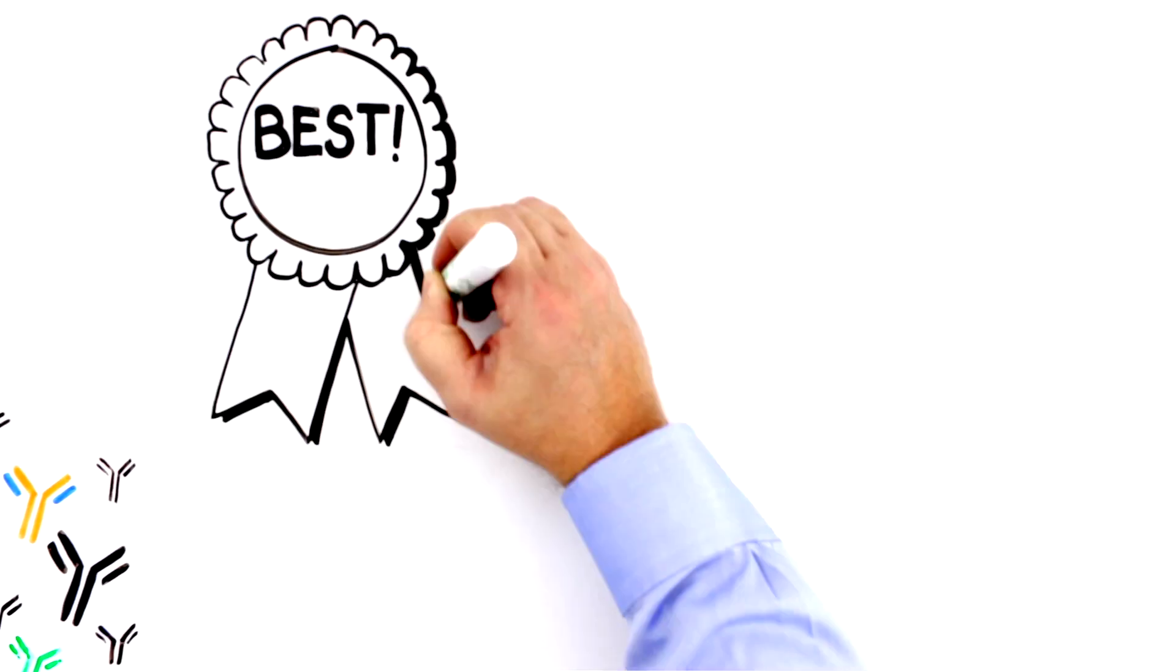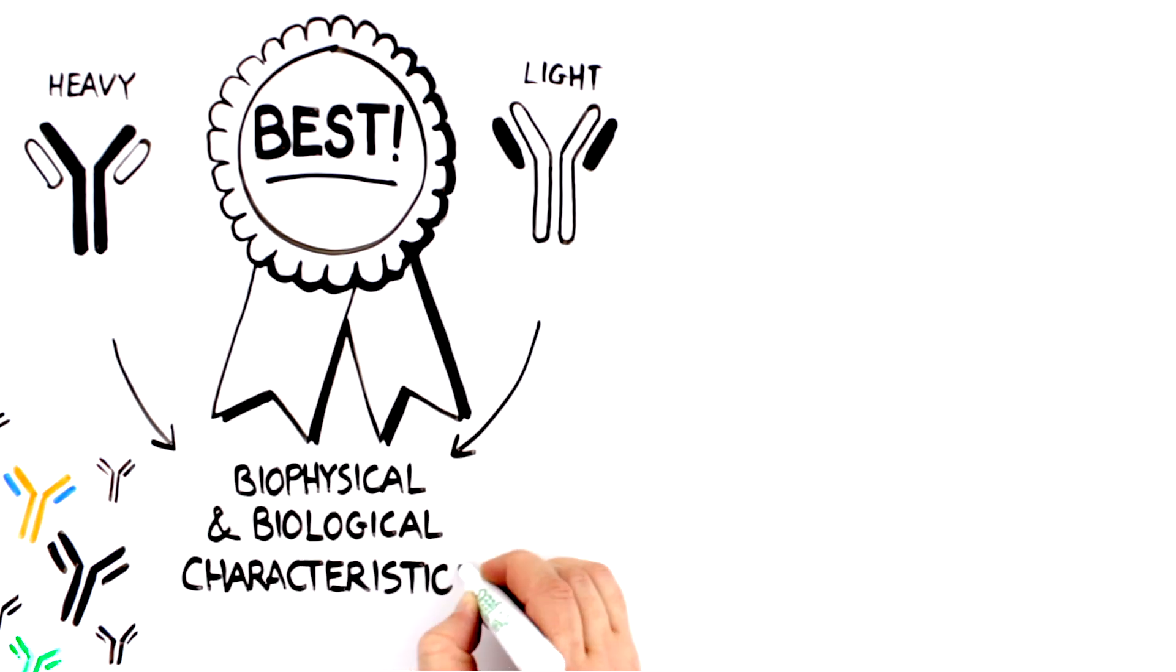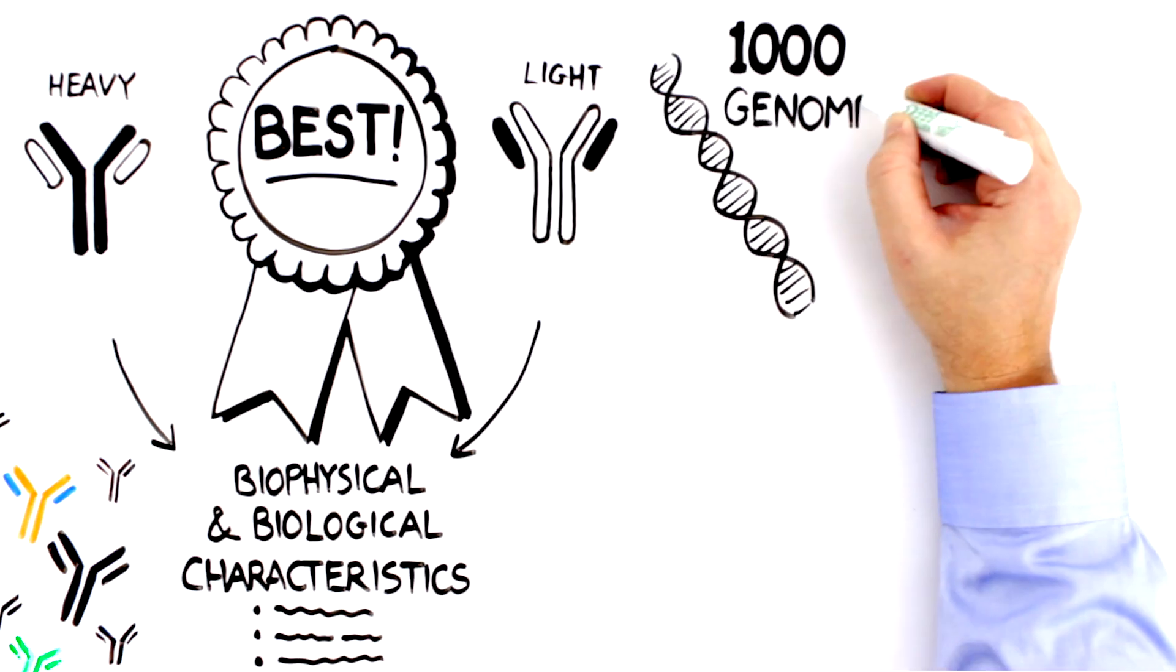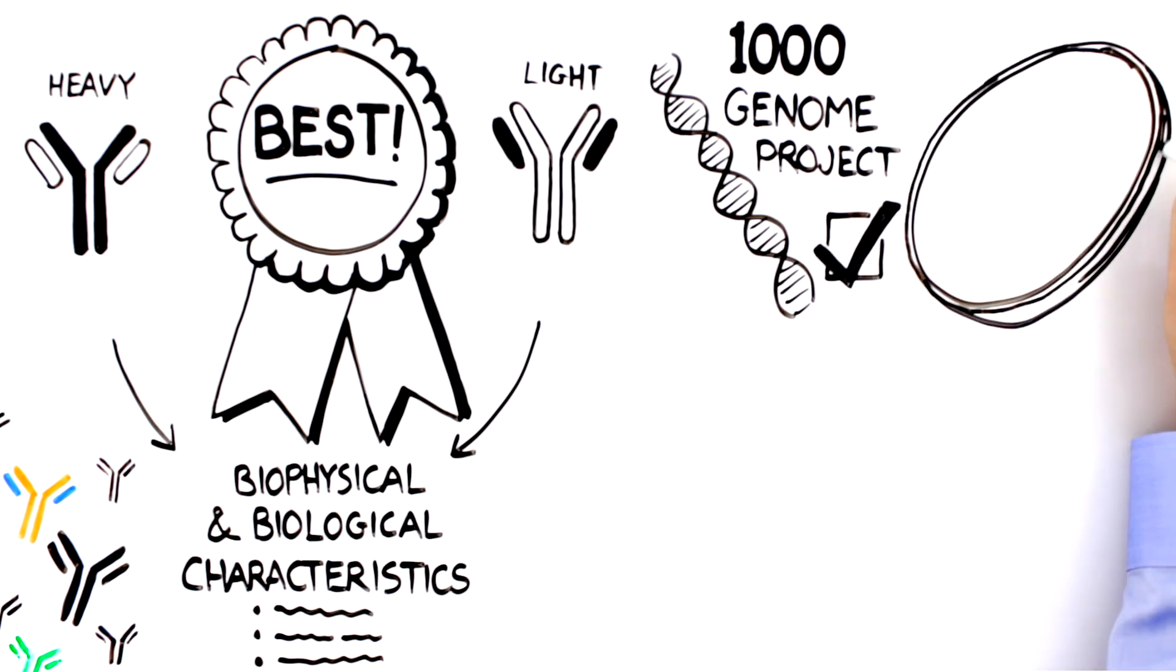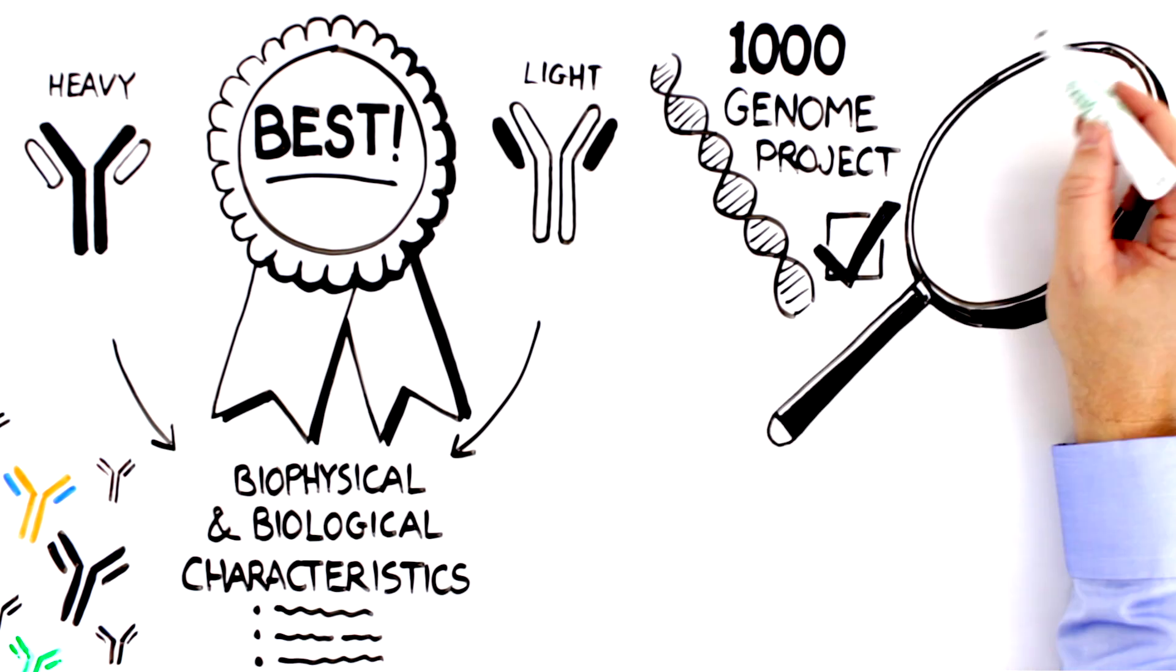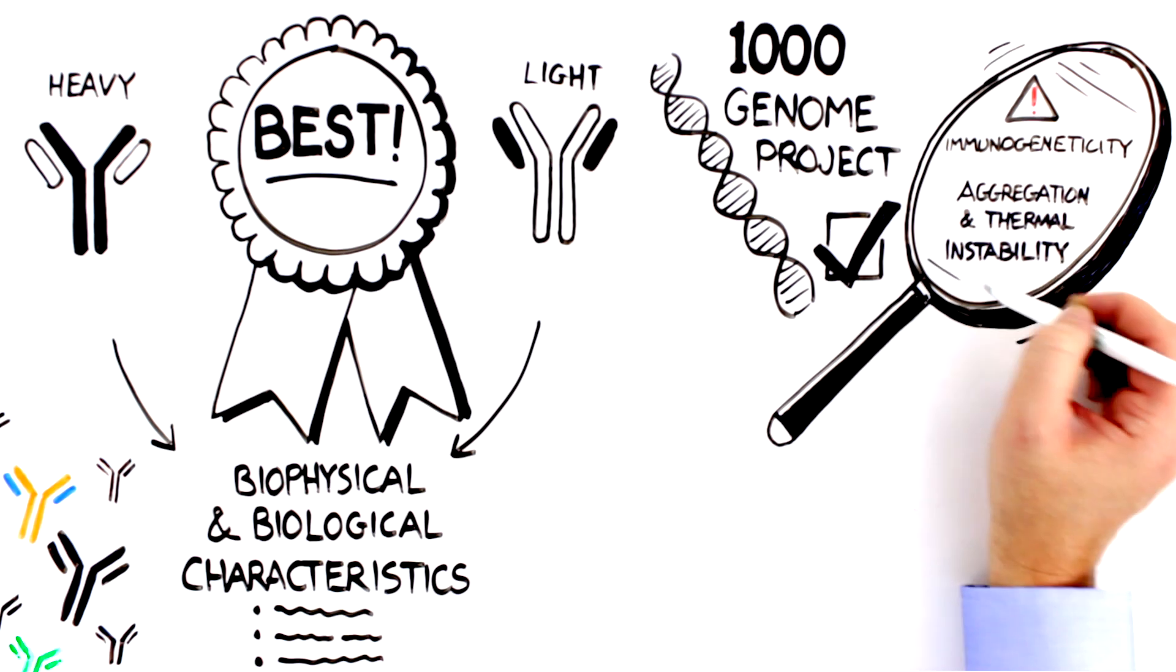The best therapeutic heavy and light scaffolds were determined by assessing the biophysical and biological characteristics of successful therapeutic antibodies, using the thousand genome project and other data sources to learn their strengths and weaknesses, identifying features that predispose antibodies to liabilities like immunogenicity, aggregation and thermal instability, and then avoiding them in the design.